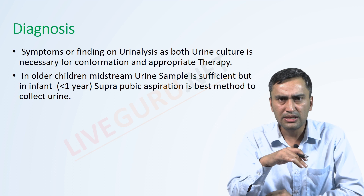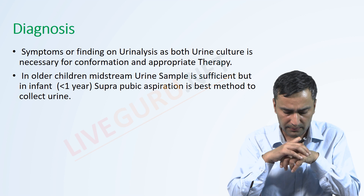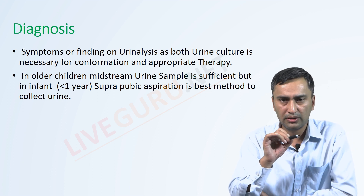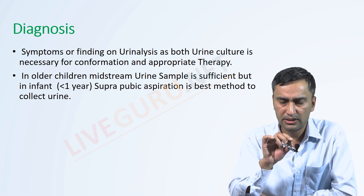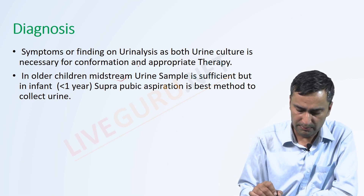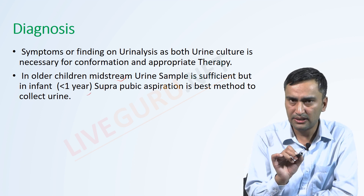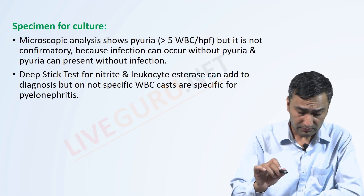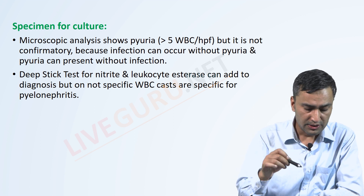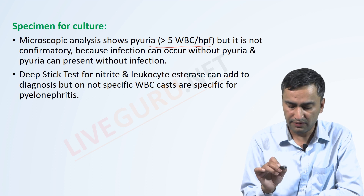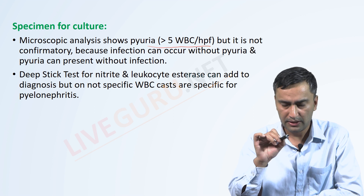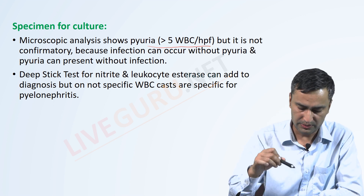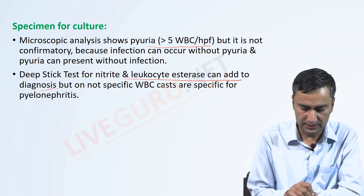Diagnosis is very important for UTI. For symptoms or urine analysis findings, urine culture is necessary for definitive diagnosis. Regarding sample collection: in older children, mid-stream urine sample is sufficient. In infants less than one year, the best method for urine sample collection is suprapubic aspiration. On microscopy, more than 5 WBC per high-power field is not confirmatory but raises suspicion. Dipstick test for nitrites or leukocyte esterase can add further support to the diagnosis.